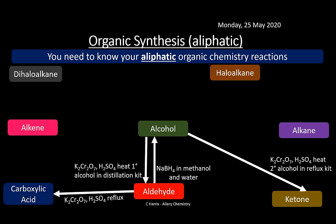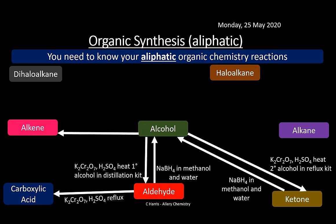Ketone to alcohol: sodium borohydride in methanol and water — again a reducing agent. Alcohol to alkene: concentrated sulfuric acid or phosphoric acid and heat. (A quick joke: why are Geordies so good at chemistry? Because they're al-keen!) Alkene to alcohol: steam, phosphoric acid catalyst, 60 atmospheres, 300°C.